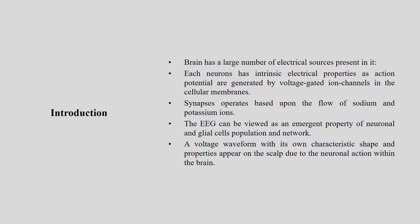The brain has a large number of electrical resources. Each neuron has intrinsic electrical properties, and action potentials can be generated by voltage-gated ion channels in the cellular membrane. These are measured in microns. Synapses operate based on the flow of sodium and potassium ions — though detailed neurophysiology is beyond the scope of this course.